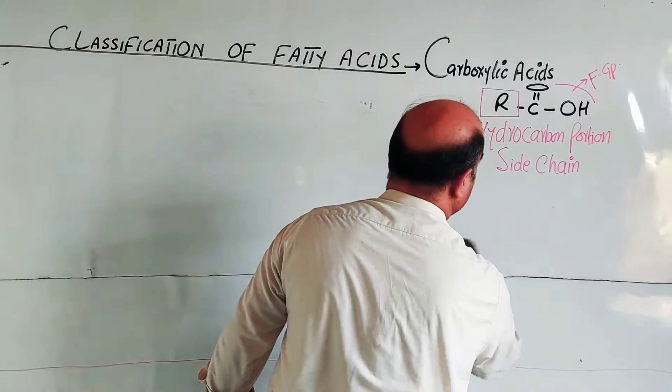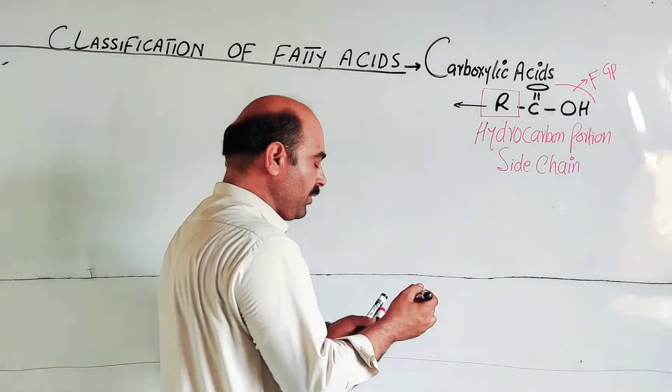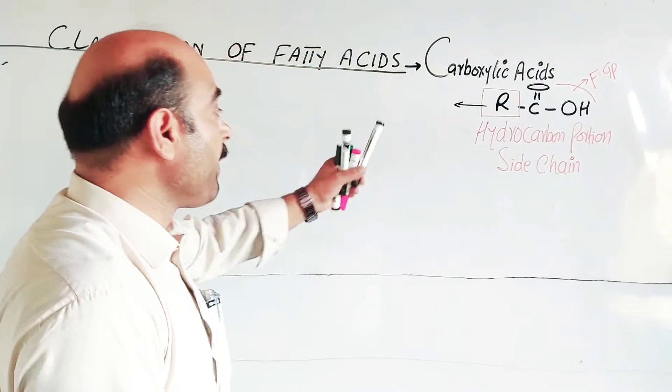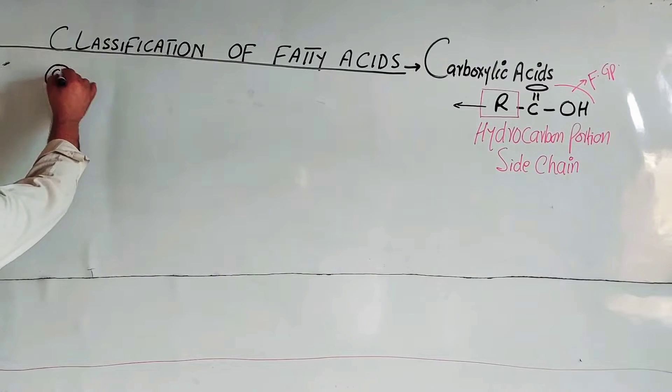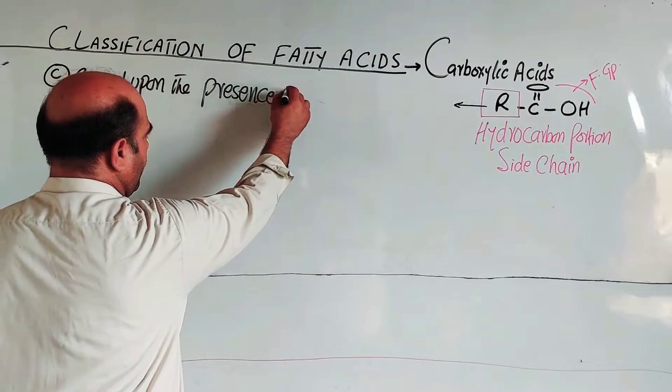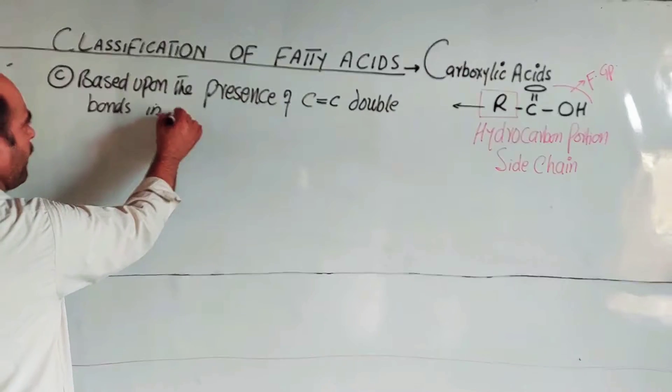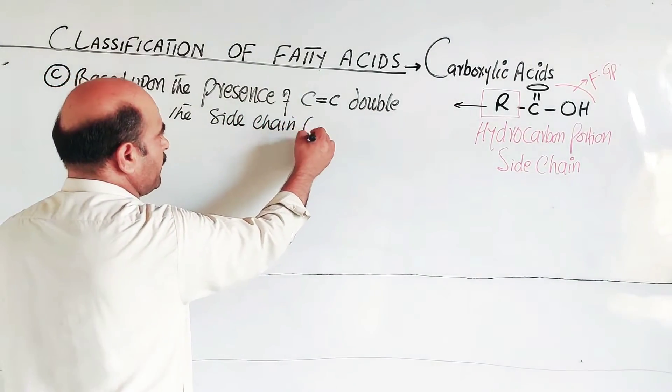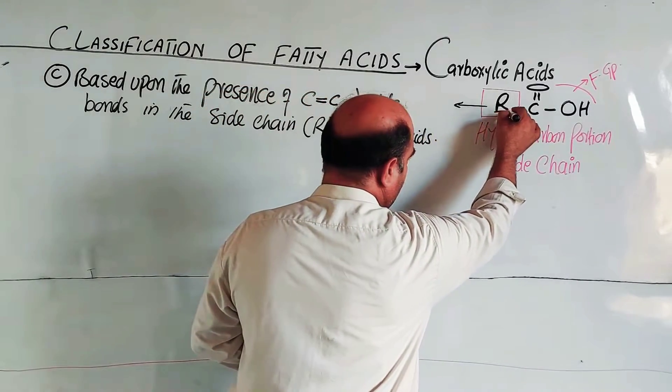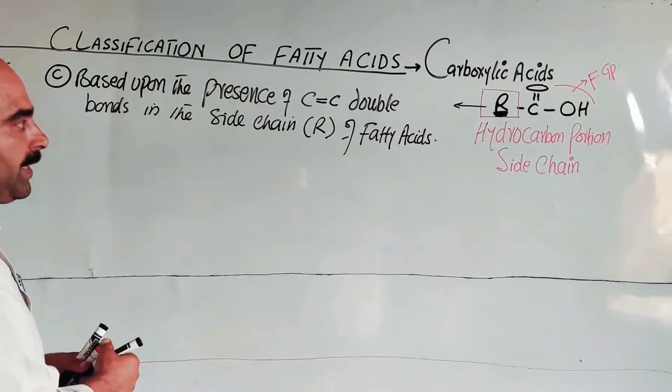The third classification is based upon the presence of carbon to carbon double bonds in the side chain, in the hydrocarbon portion or alkyl portion of fatty acids. The carbon side chain, the hydrocarbon portion. First of all, if the R portion has carbon to carbon single bonds only, then it is saturated.